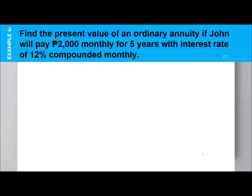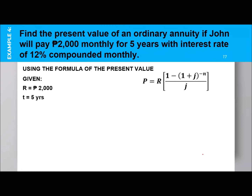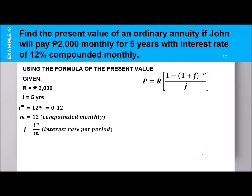Another example: Find the present value of an ordinary annuity if John will pay 2,000 pesos monthly for 5 years with an interest rate of 12% compounded monthly. Given: R equals 2,000; T equals 5 years; interest rate is 12% or 0.12; monthly so M equals 12; J equals 0.12 divided by 12 equals 0.01; N equals 12 times 5 equals 60.